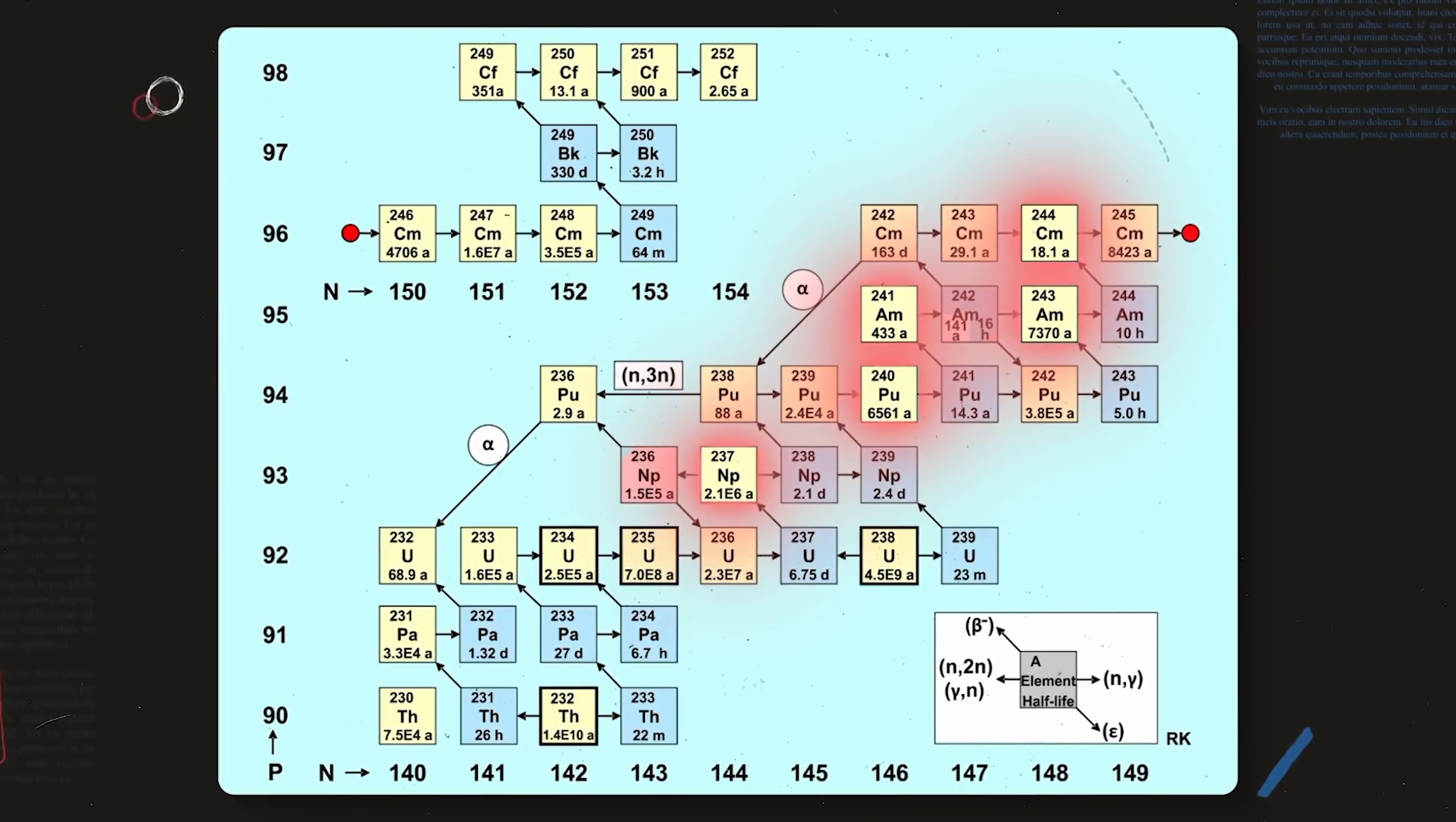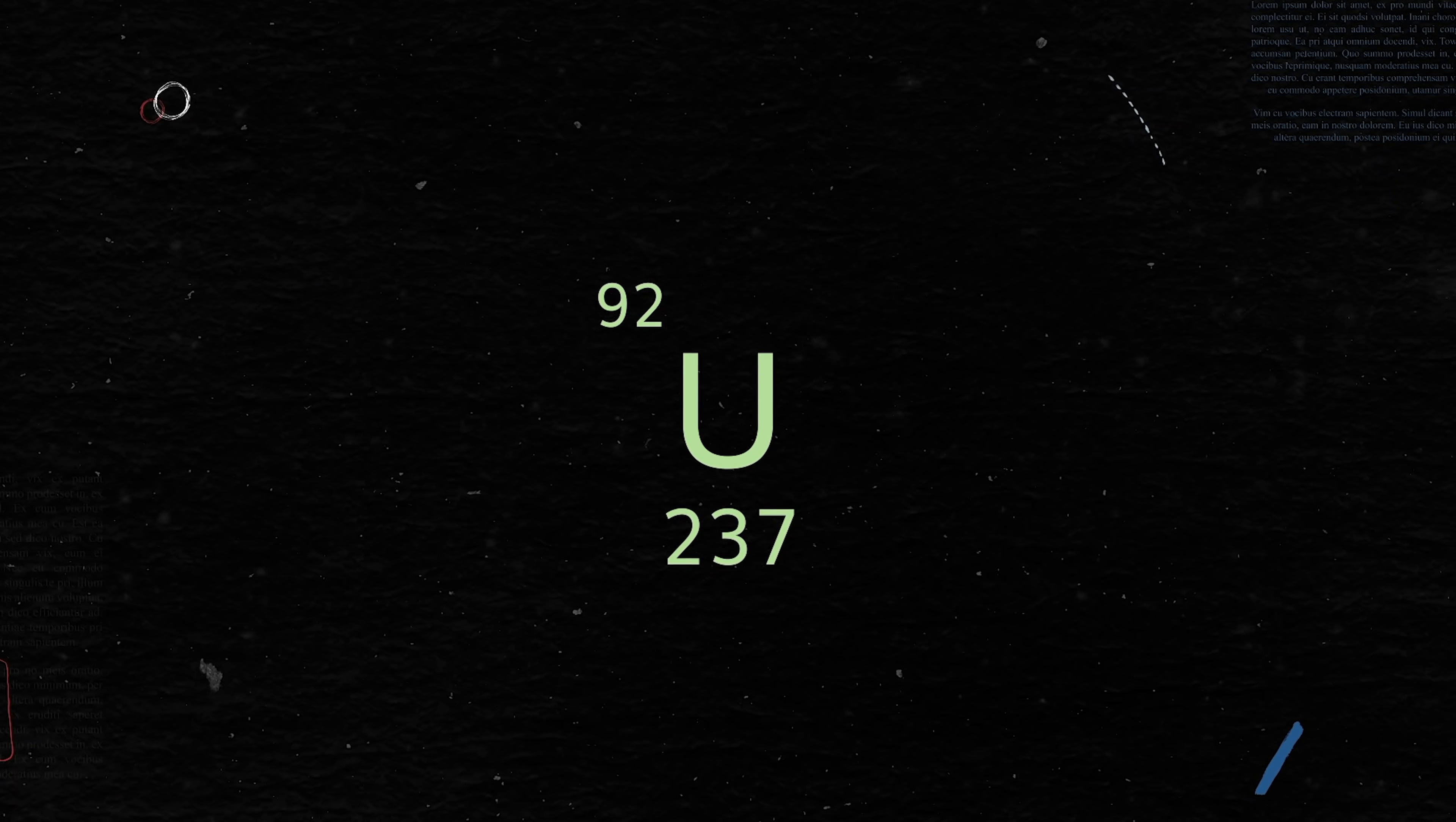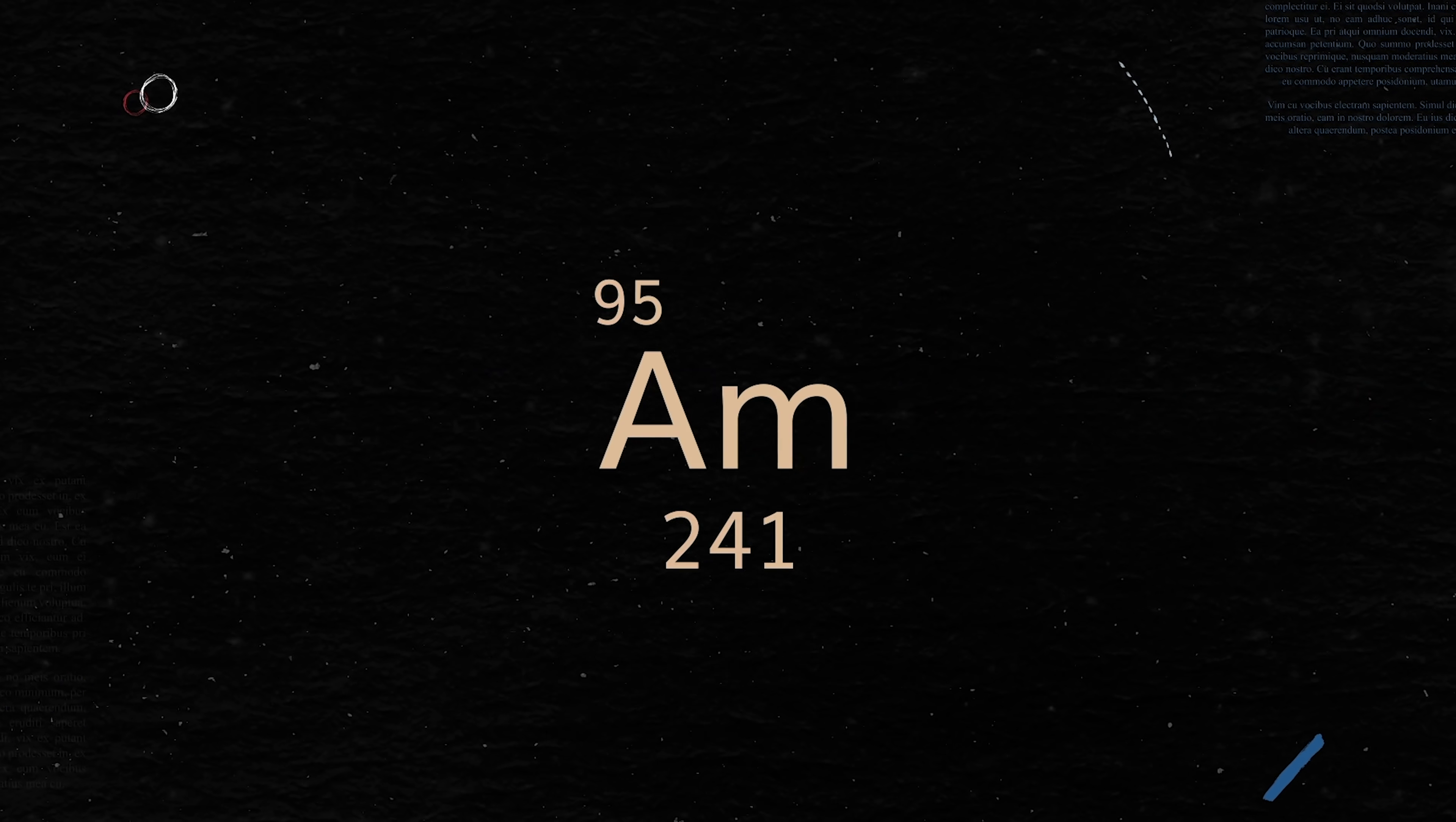Now, uranium atoms do this thing when they absorb a neutron. Instead of fissioning like good little atoms, they just start climbing. Uranium absorbs a neutron. That neutron turns into a proton and an electron, and so it gets one step up the periodic table to become neptunium. Then it absorbs another neutron and becomes plutonium, then another and becomes americium and curium. This migration up the periodic table is what leads to the production of higher actinides. And by the end of a fuel cycle, you're left with several hundred kilograms of these. These higher actinides are what cause spent nuclear fuel to remain radioactive for millions of years.